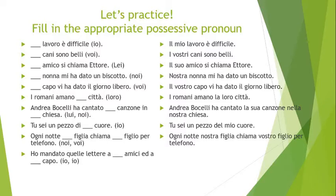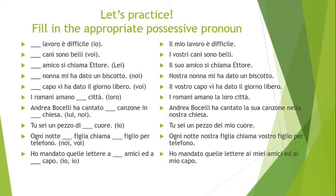Next, a romantic one: 'tu sei un pezzo del mio cuore' — 'you are a piece of my heart.' 'Di' plus 'il' becomes 'del.' Then: 'ogni notte nostra figlia chiama vostro figlio per telefono' — no article because 'figlia' and 'figlio' are close family members. Finally: 'ho mandato quelle lettere ai miei amici ed al mio capo' — 'a' plus 'i' becomes 'ai,' and 'a' plus 'il' becomes 'al.' Tying together what we learned last week with possessive pronouns.